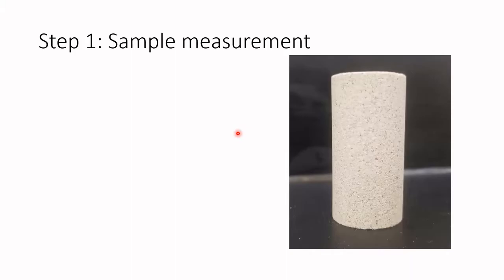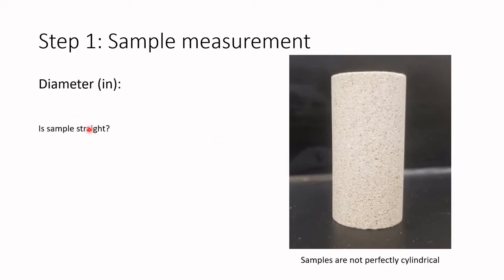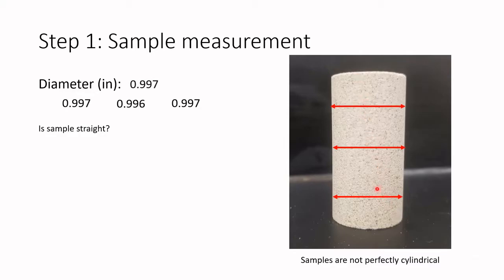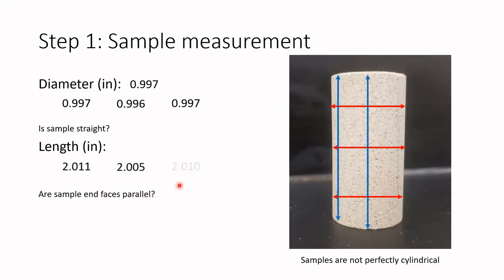When we measure the sample, the procedure is exactly the same as in laboratory one. We control that the sample is straight and has nearly the same diameter values at different measurement points. The diameter is the average of these points. Then by measuring the length at different angles, we verify that the end faces are parallel. We average those measurements as well, and finally we weigh the sample.